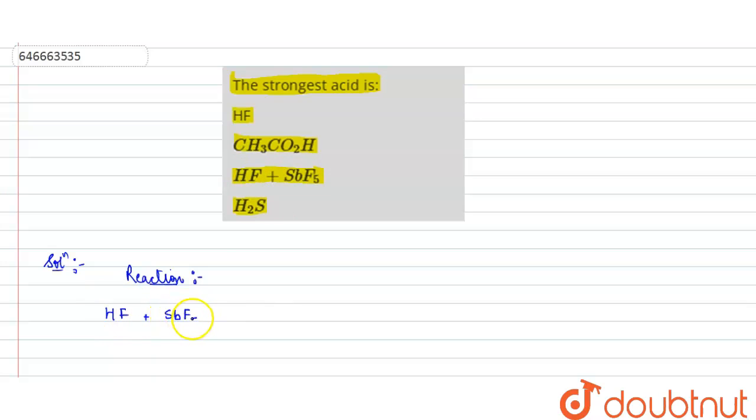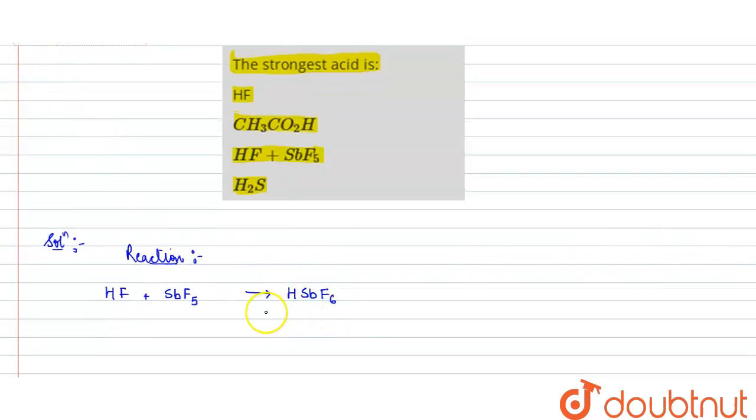...they result in the formation of a very strong acid which has the formula HSbF6. What is the name of this formed acid? It is fluoroantimonic acid.